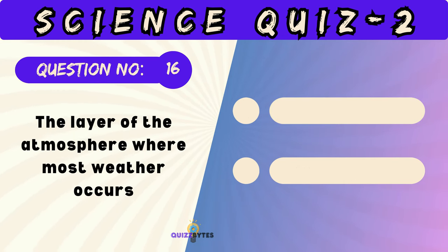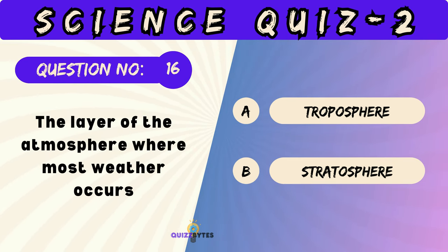The layer of the atmosphere where most weather occurs is called. The answer is troposphere.